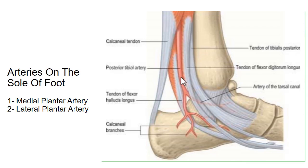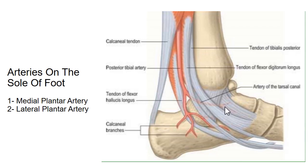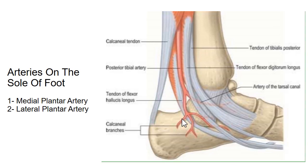This posterior tibial artery passes deep to the flexor retinaculum and gives off two branches: the medial plantar and lateral plantar arteries. Both medial and lateral plantar arteries supply skin, muscles, and bones on the sole of the foot, and they supply all the toes through different branches. The posterior tibial artery also gives off calcaneal branches, which supply the calcaneum and the heel area on the sole of the foot.